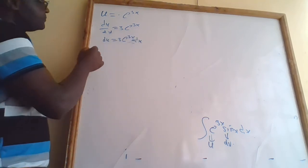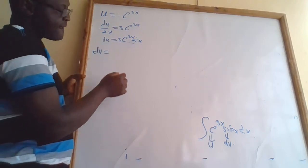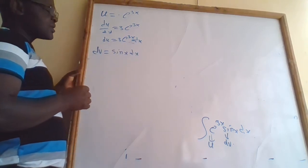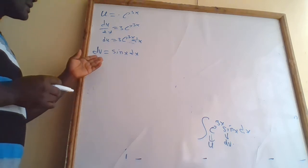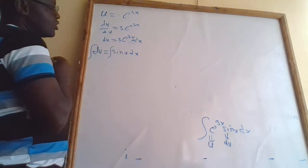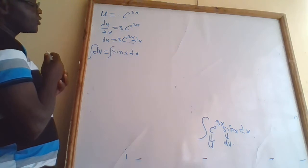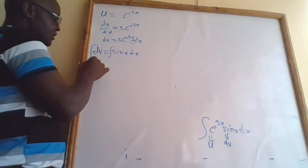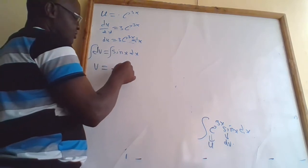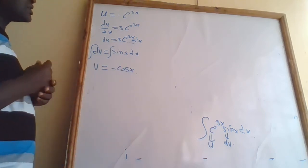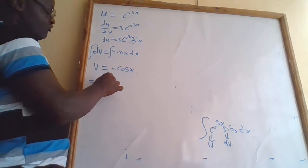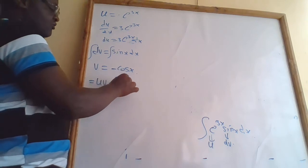Now we have dv = sin(x) dx. To get the value of v, we integrate both sides. When you integrate sin(x), you get −cos(x). Remember the integration by parts formula is given by: u·v minus the integral of v·du.